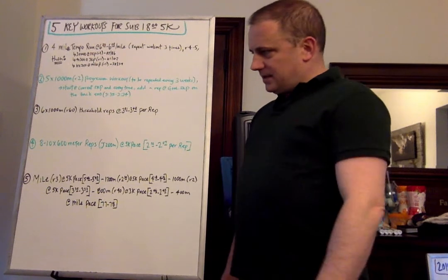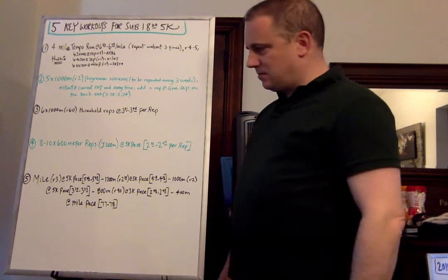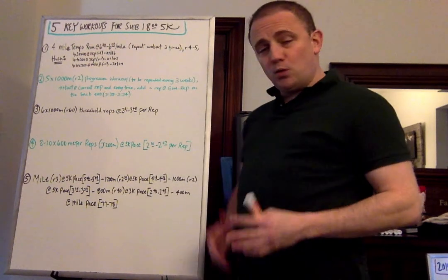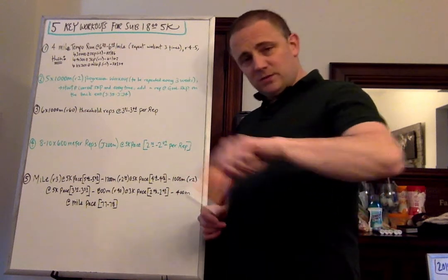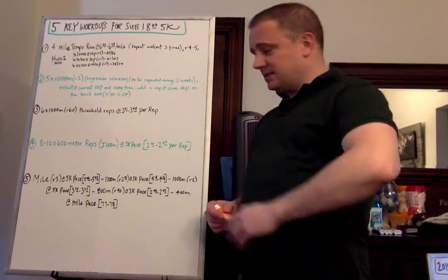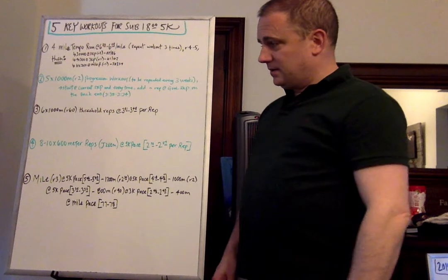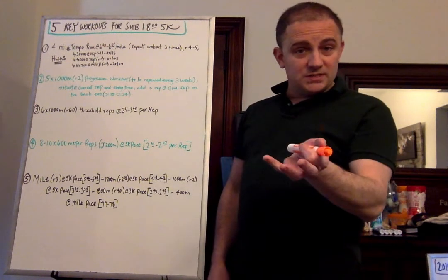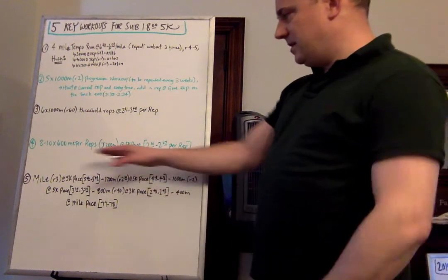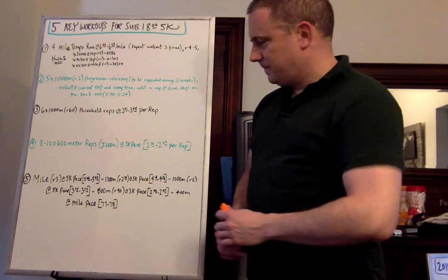Workout number four, I like 600-meter efforts. Eight to 10 by 600-meter reps with a 200-meter jog at 5K pace. So in this case, it's 2:10 to 2:07 per rep. It's continuous 600-meter efforts. You can progress from 400s to 500s to 600s, however you like to do it. But I like 600-meters. And you can progress from 600s to 800s as well. Instead of doing 8 by 600, work your way towards 6 by 800 at your goal pace. That's another great progression you can do over time. But here's 8 to 10 by 600s with a 200-meter jog.